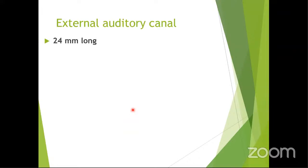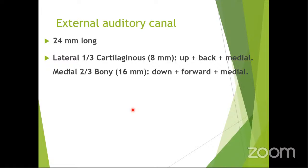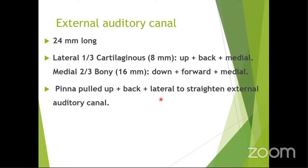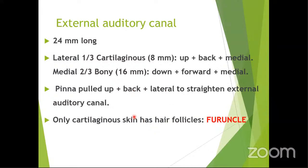The external auditory canal is 24 mm long — one-third cartilaginous (8 mm) and medial two-thirds bony (16 mm). The lateral cartilaginous part is directed upwards and backwards, so when examining, you must pull the pinna upwards and backwards to straighten the canal and visualize the tympanic membrane. Hair follicles are present only in the cartilaginous part, so whenever there is a furuncle, it is always in the cartilaginous portion.